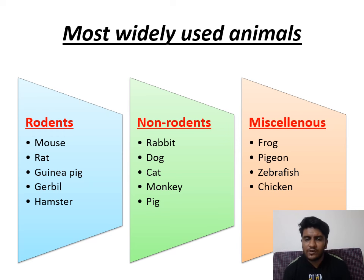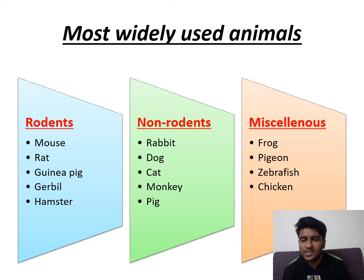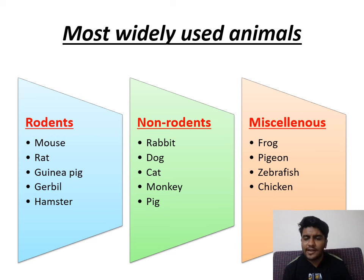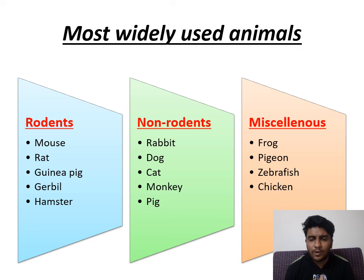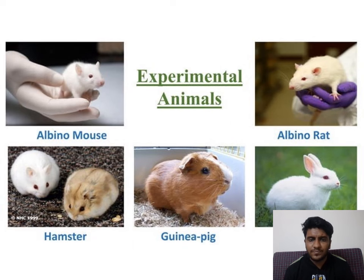The rat uterus is used for spasmolytic activity. Rabbit is used for skin irritation test, pyrogen test, Draize test, and many other things. Each particular animal requires particular protocols and guidelines to be followed. These are the most commonly used experimentation animals — albino — with different strains and breeds.